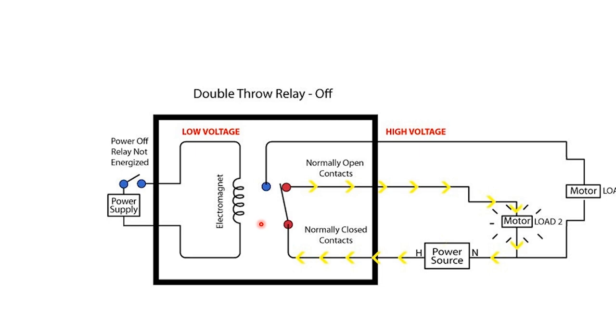One thing to consider with a double throw relay is it can be used in place of a single throw relay by wiring only to the normally open or only to the normally closed side of the relay.